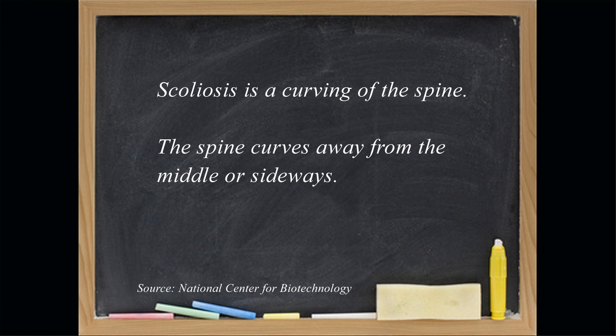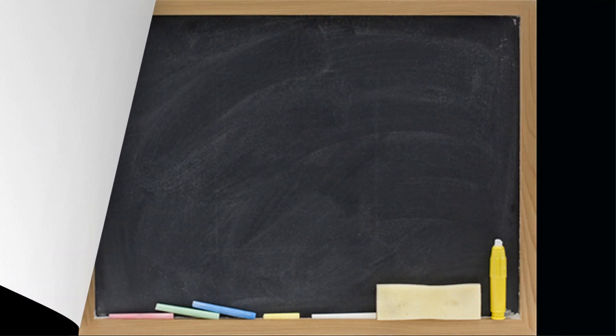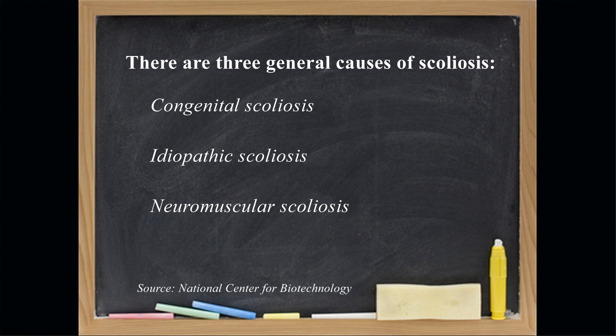Are there different types you could generally discuss? So you can have scoliosis that is related to congenital abnormalities of the formation of the spine. You can have adolescent idiopathic scoliosis, which is the most common type that we think about, and that seems to be an inherited disorder that occurs during growth spurts during the adolescent phase.